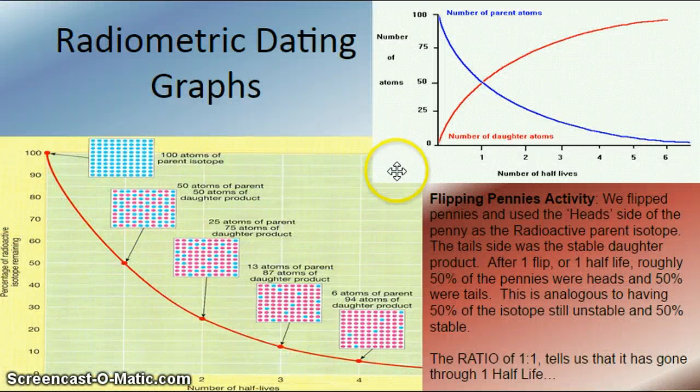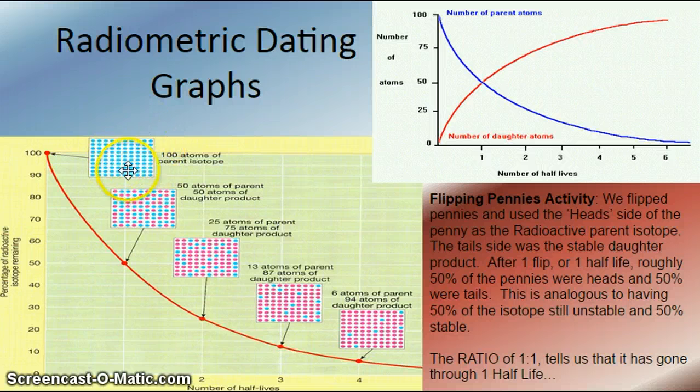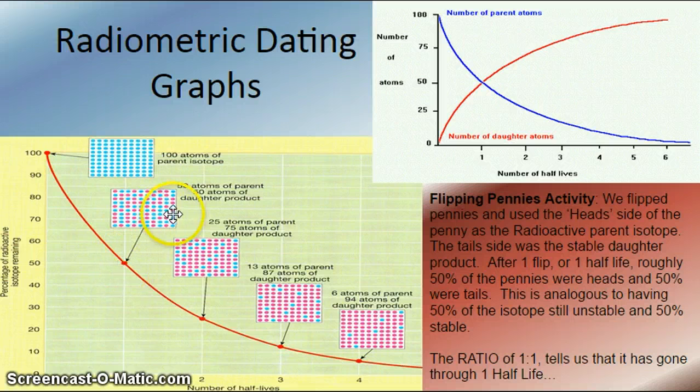And here's what it looks like on a graph. Essentially, if I have 100 atoms of parent isotope, these are all going to decay. And as it goes through one half-life, it's going to have 50 atoms of parent and 50 atoms of daughter product. In other words, half is going to be unstable parent, half of it is going to be stable daughter.